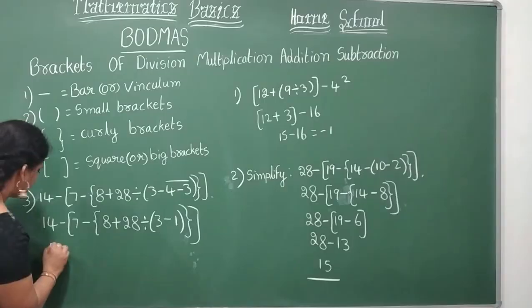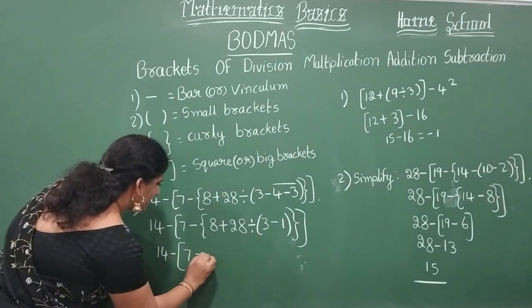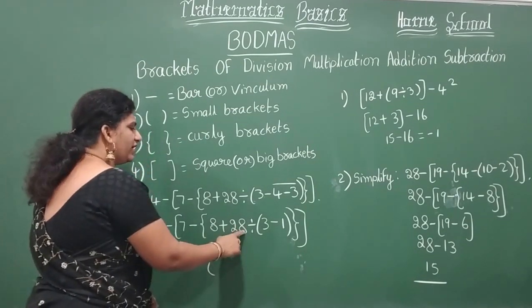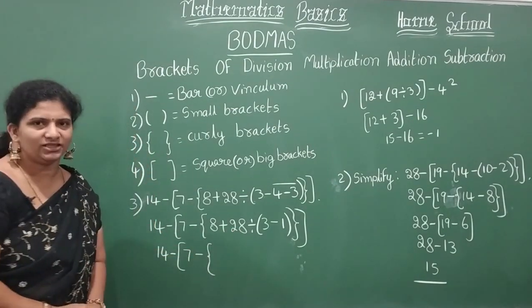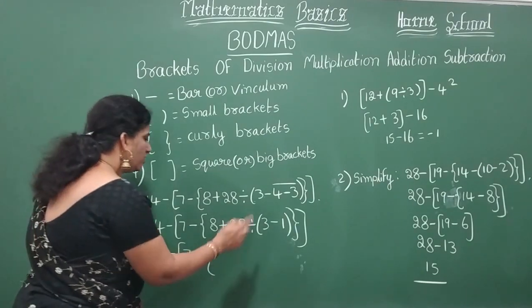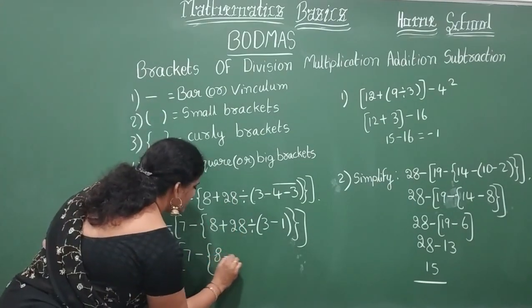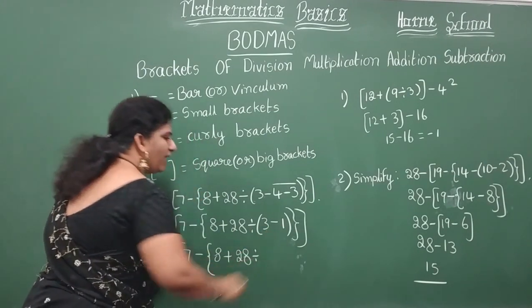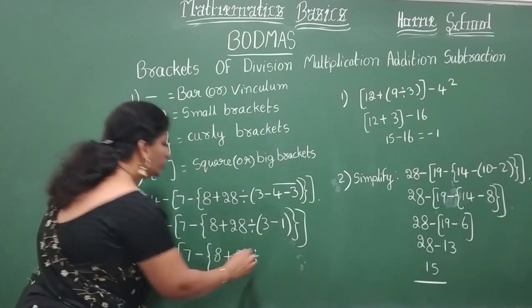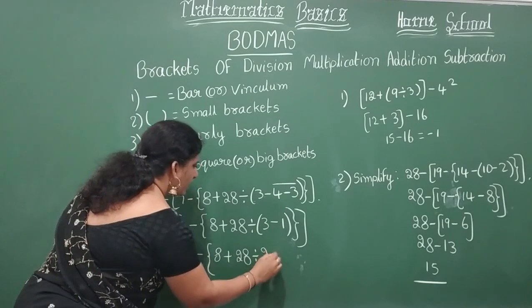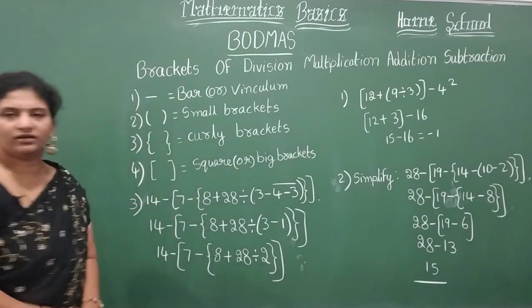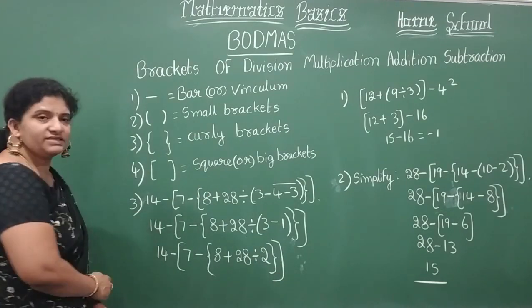You remove this part and write curve bracket then curl square. Next step: 14 minus square bracket 7 minus. So here 8 plus 28 if you want you can add directly. No ma'am later we do this. No problem. Divide it by 3 minus 1 will be 2. And this will be followed by this bracket.